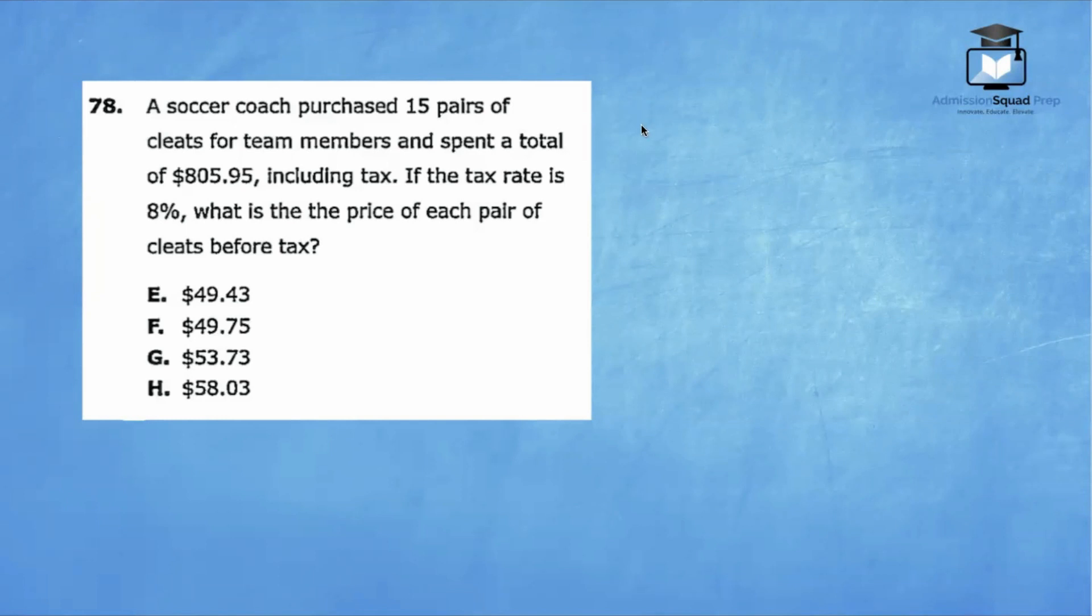For 78, it says a soccer coach purchased 15 pairs of cleats for team members and spent a total of $805.95, including tax. If the tax rate is 8%, what is the price of each pair of cleats before tax?